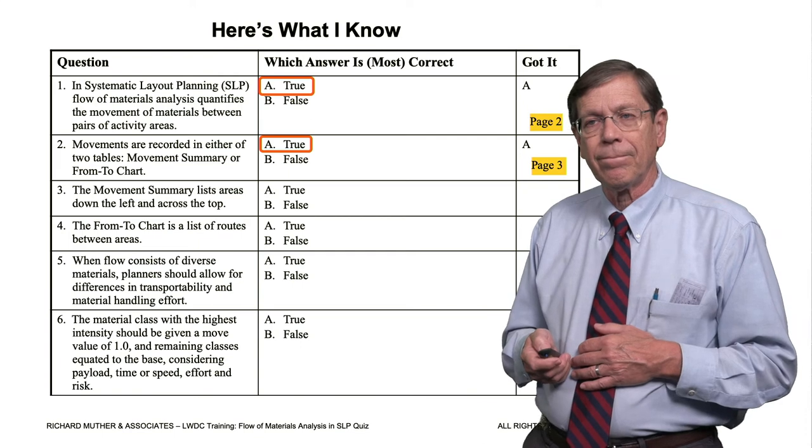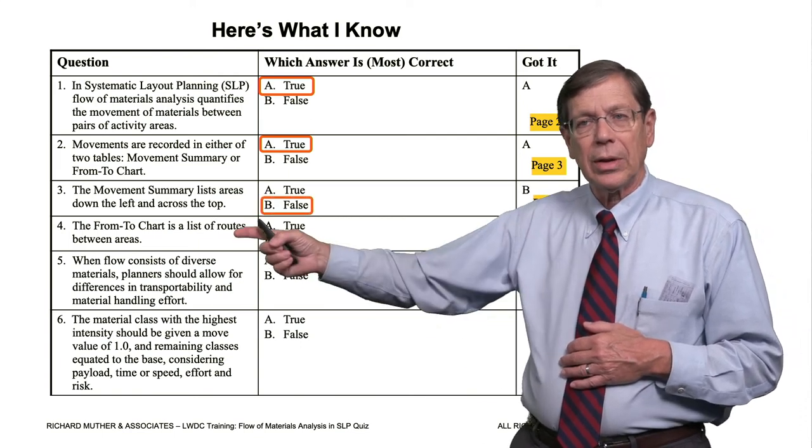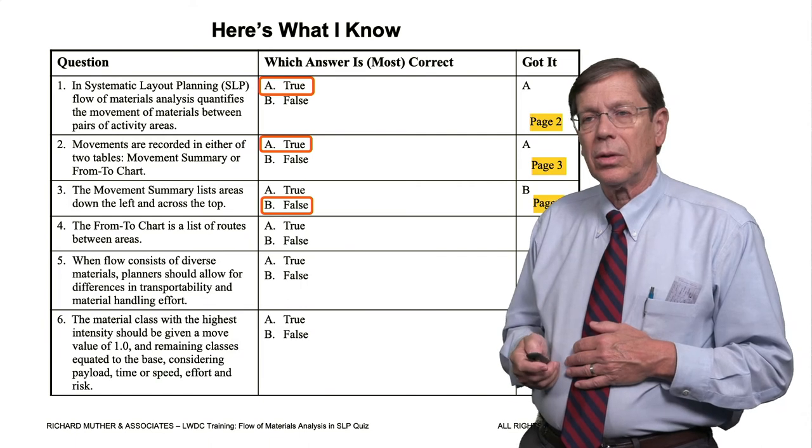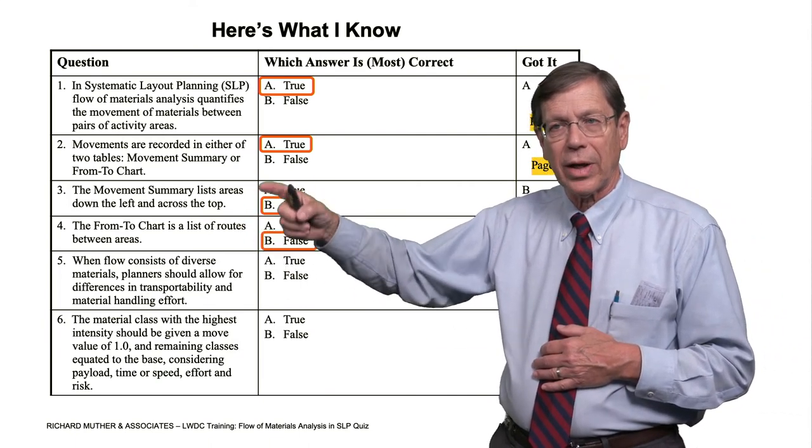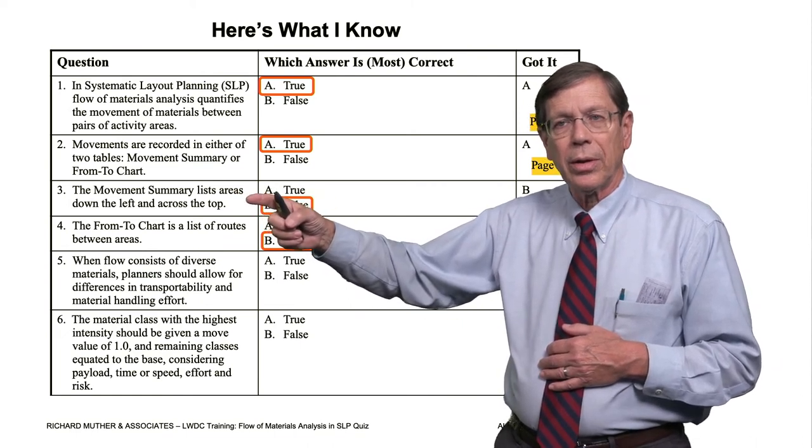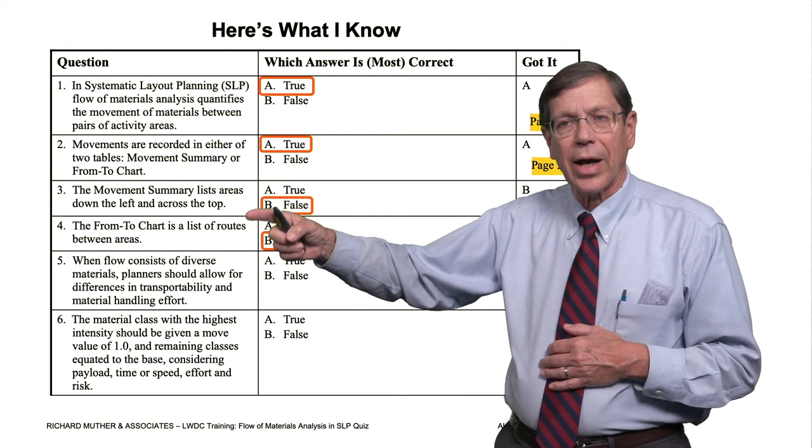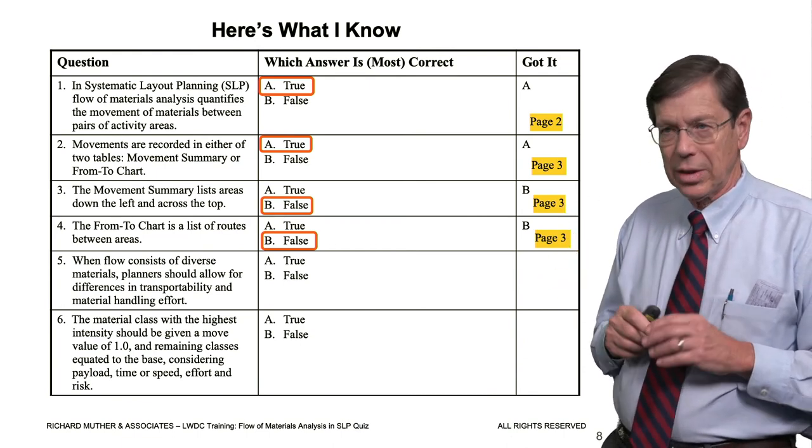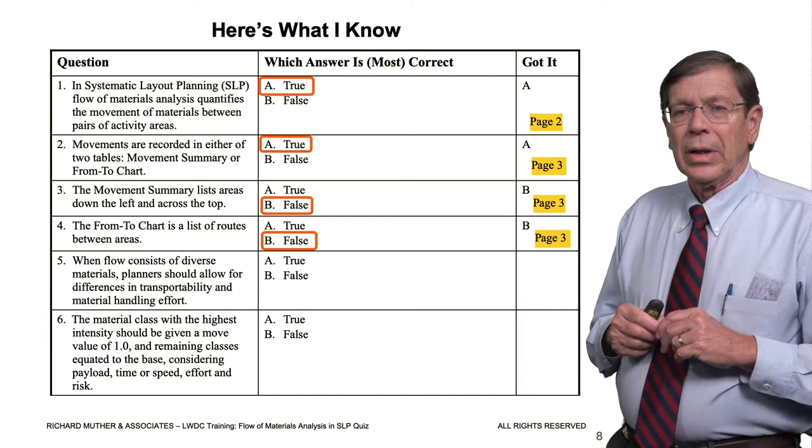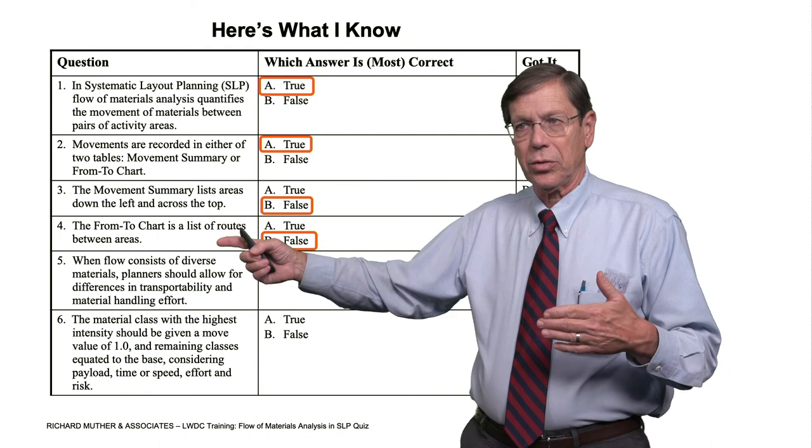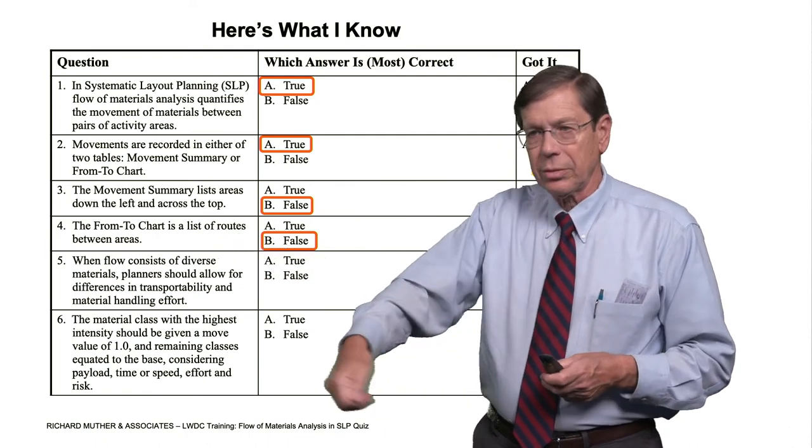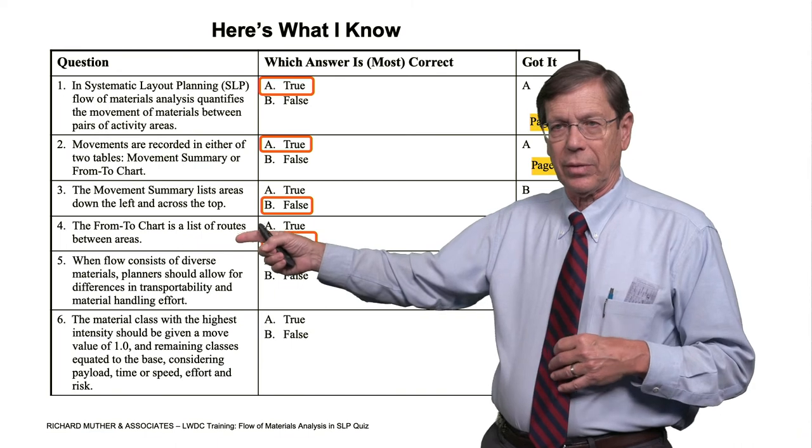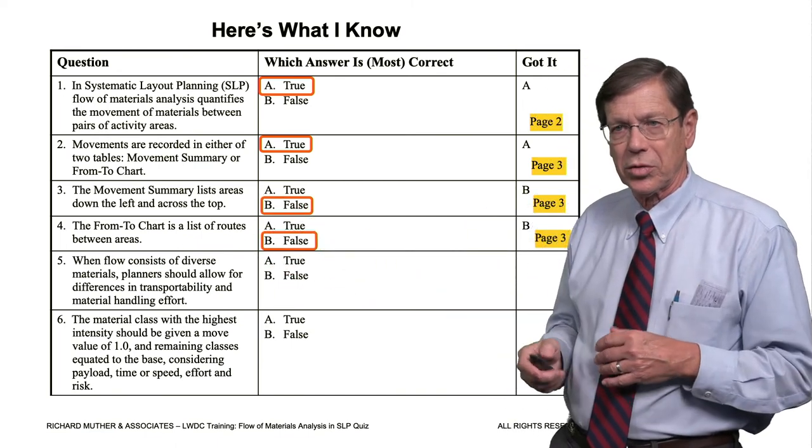That's not what that does. The from-to chart is a list of routes. No, it's not. So these are both false because I've inverted them. The from-to chart lists areas down the left and across the top. The movement summary does this. It's a list of routes. So go back and study that if that wasn't immediately evident to you. That's explained on page three. But you need to understand that. The from-to chart is the more customary industrial engineering tool. It's been around for 100 years. And I'm sure the Egyptians did something like that in the sand, way back in the day. So that's a very long-standing thing. The movement summary is something Muther and Associates invented years ago.